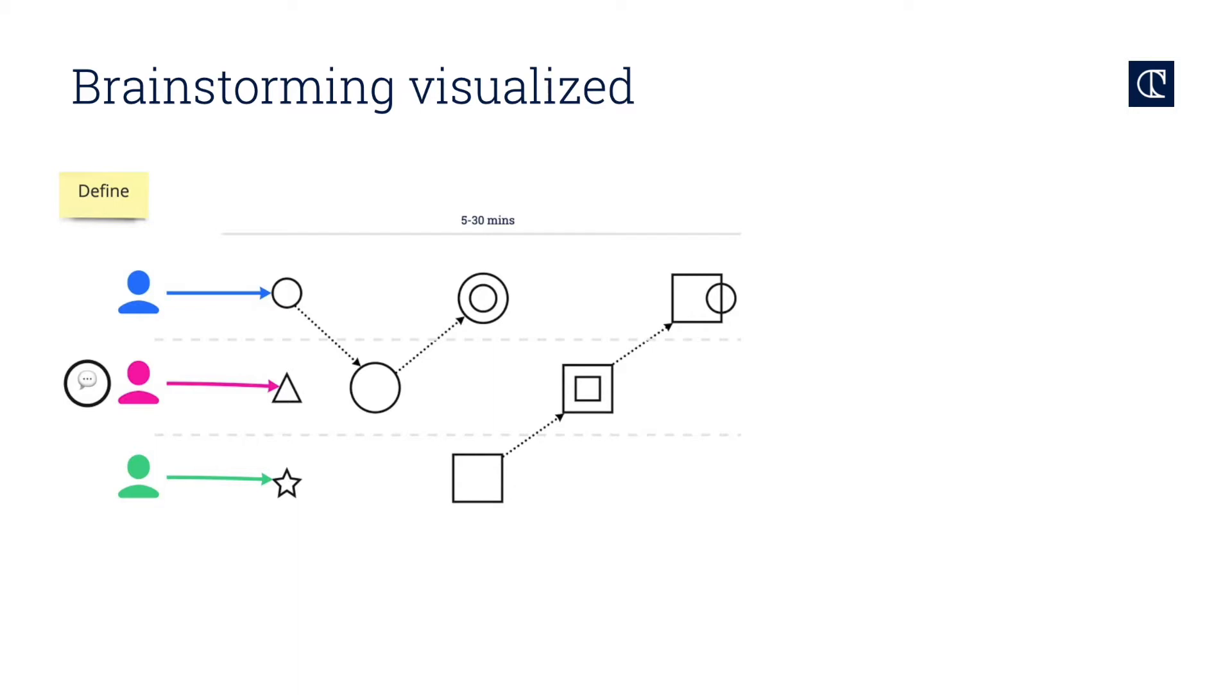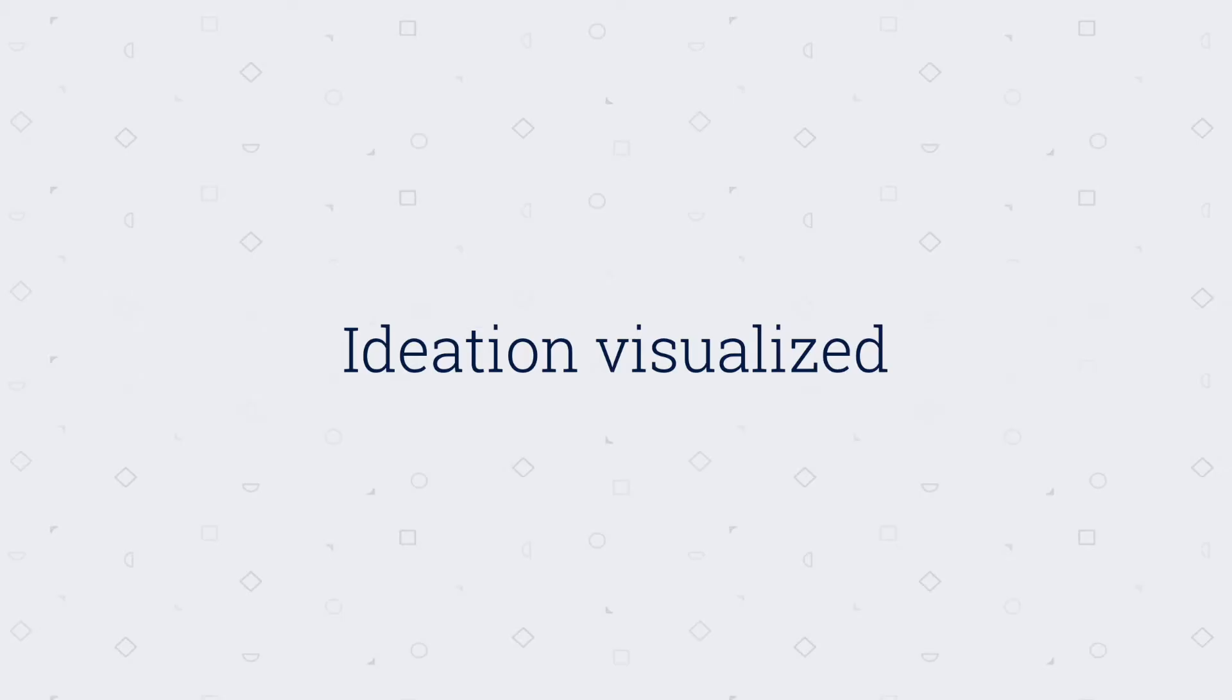This usually lasts between 5 to 30 minutes. Eventually somebody or the group picks an idea that they like and they converge on this idea. Usually they start remolding it a little bit, right? They'll change it until they come to a conclusion and then say we'll move forward with this idea. So if we count the number of artifacts, there's actually 1, 2, 3, 4, 5, 6, 7, 8, 9, 10, 11 artifacts with one specific solution. So let's look at ideation now.